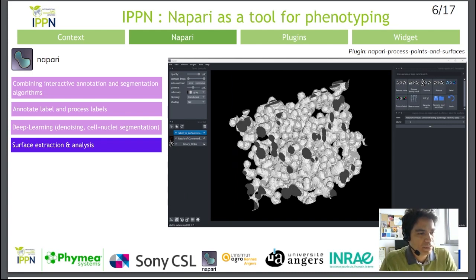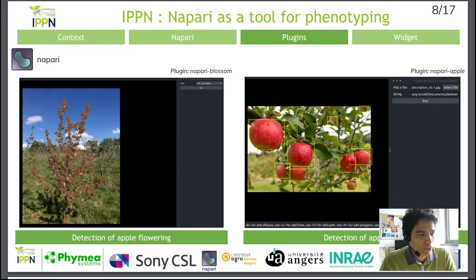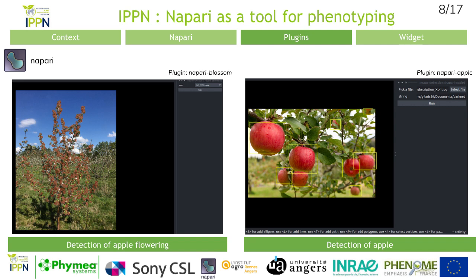For 3D data, there are plugins that allow you to extract and analyze surfaces. In total, Napari has 326 plugins. There is a Napari Hub page where you can find out about any plugins you find interesting. The Heimofen team has developed two Napari plugins that incorporate deep learning models: one plugin for detecting apple blossoms in orchards, and another plugin to detect apples in orchards.